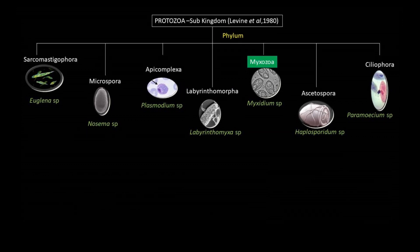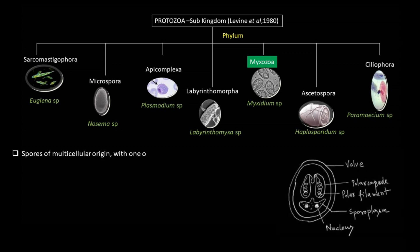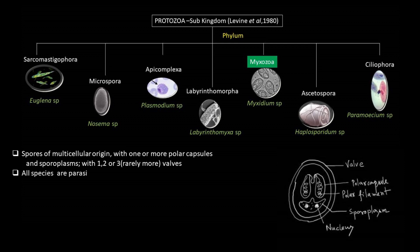Next, Myxozoa: spores of multicellular origin, with one or more polar capsules and spheroplasm, with one, two, or three — rarely more — valves present, as clearly evident in the pictorial representations. All of them are parasitic by nature.